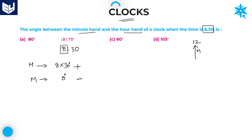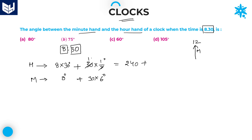For the next 30 minutes, the hours hand will cover half a degree for every 1 minute, so in 30 minutes that is 30 into half. Whereas for the minutes hand, for every 1 minute it covers 6 degrees, and we have 30 minutes, so 30 into 6. The hours hand total is 8 into 30 plus 30 into half: that is 240 plus 15, which equals 255 degrees.